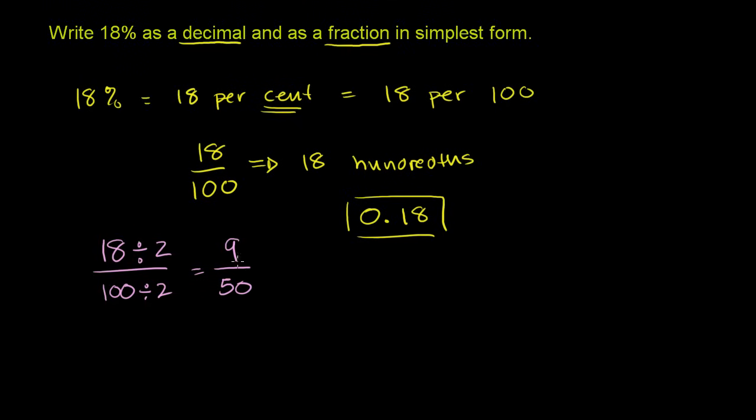And I don't think these guys share any common factors. 50 is not divisible by 3. 9 is only divisible by 3 and 1 and 9. So this is the fraction in simplest form.